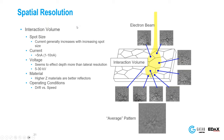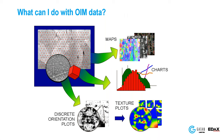What can we do with this data? Our software allows us to create maps, perform various statistical analyses shown in chart or plot form, and create orientation plots of discrete orientations. We can also analyze the data using multi-dimensional statistical analysis to understand what we call texture — basically a measure of preferred orientation.